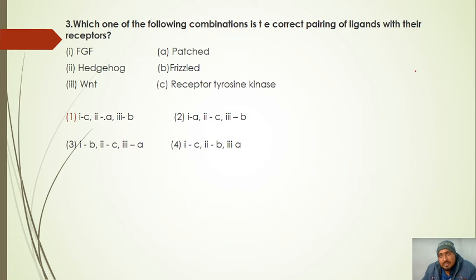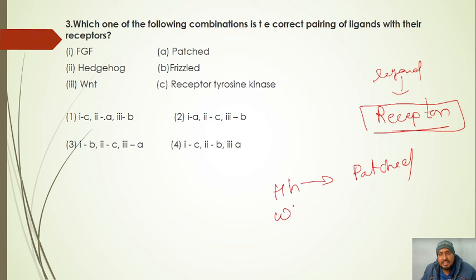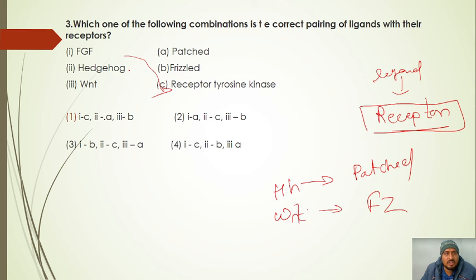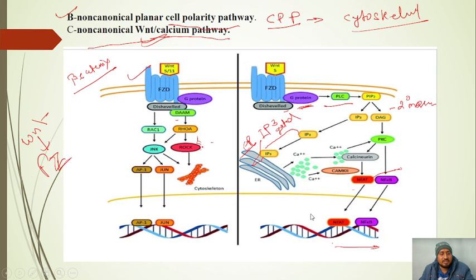The third question is a receptor-matching question. The ligands and receptors to match are: FGF uses the fibroblast growth factor receptor (a receptor tyrosine kinase); hedgehog uses the Patched receptor; and WNT uses the Frizzled receptor. In the answer options, the correct matches are: first is FGF, second is hedgehog with Patched, and third is WNT with the Frizzled receptor. That is all about the WNT signalling pathway. Thank you.